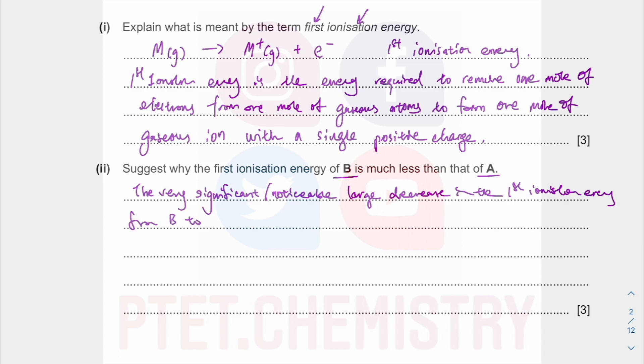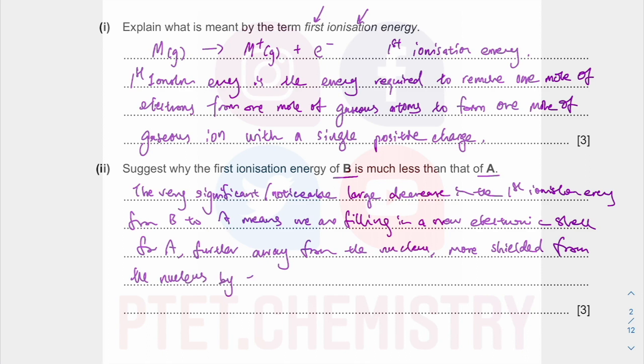from B to A means we are filling in a new electronic shell for A, further away from the nucleus, further away from the nucleus, more shielded. So we're using all the correct technical terms. More shielded from the nucleus. What are you being shielded by? Shielded by the inner shell electrons. So your outer shell electrons are more shielded by the inner shell electrons.